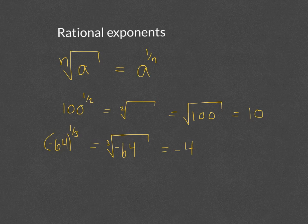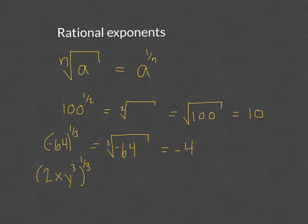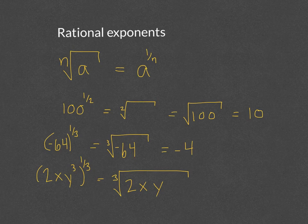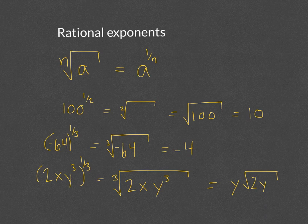One more example: if we have 2xy to the third power, all to the 1/3 power, we can rewrite that as the cube root of 2xy to the third. The cube root of y cubed is y, leaving us with 2x. So fraction powers where the numerator is 1 can be rewritten as the nth root.